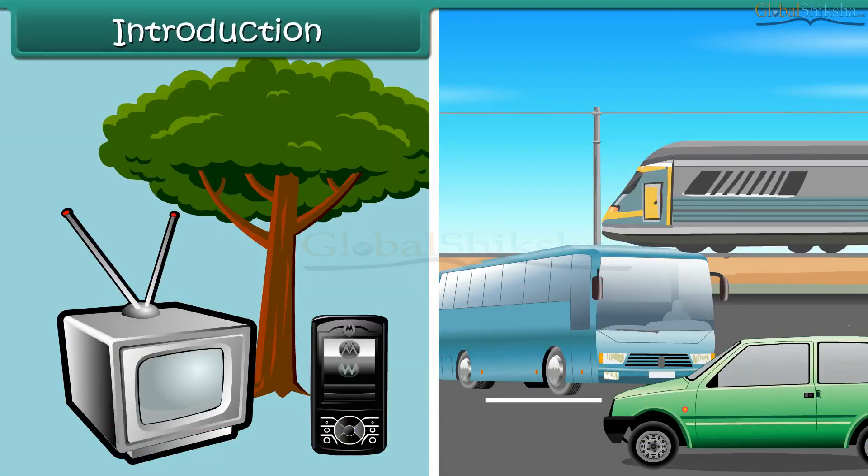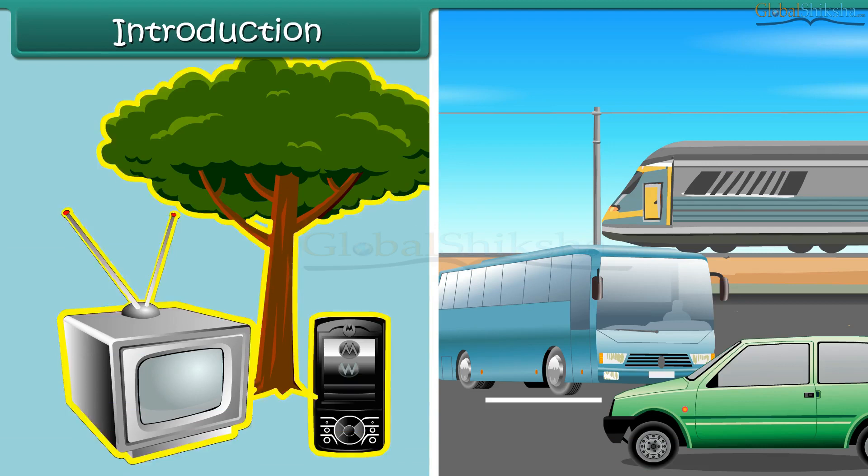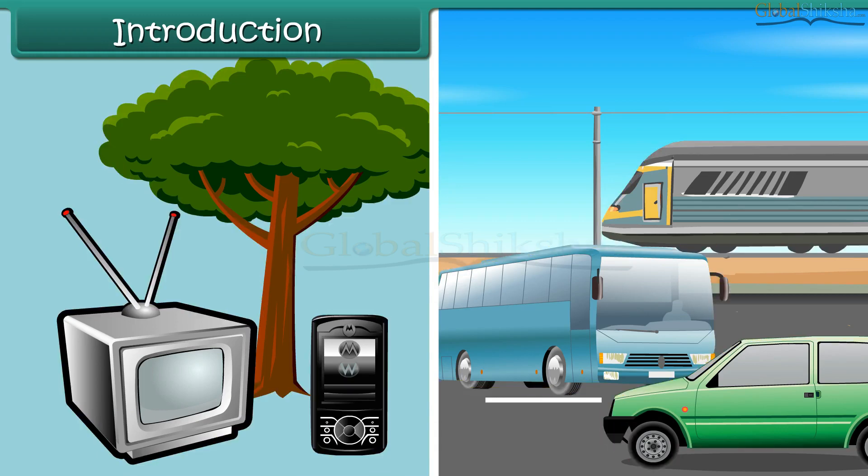Look around yourself and you will find objects of different kinds such as television, mobile, trees, cars, buses, trains, etc.